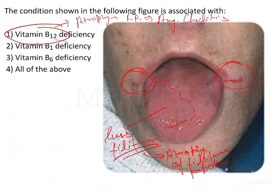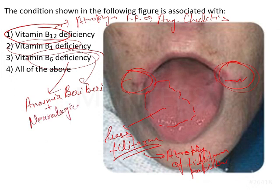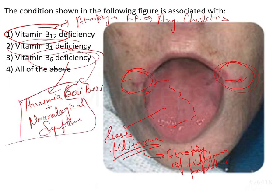Then we have option 2, that is Vitamin B1 deficiency. Now Vitamin B1 deficiency is also known as thiamine deficiency, and that is associated with the disease known as beriberi. Then we have Vitamin B6 deficiency, which is basically associated with anemia that also shows neurological symptoms. It is generally seen in patients on antitubercular therapy as well, so that is a frequently asked question in the exam.